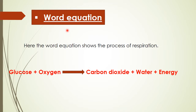We can define the process of respiration using the word equation. We have talked about two reactants used in respiration: one is glucose and the other is oxygen. When these two react, the products that are made are carbon dioxide, water, and energy. The most important product is energy, and plants use this energy to fulfill and complete their own life activities.